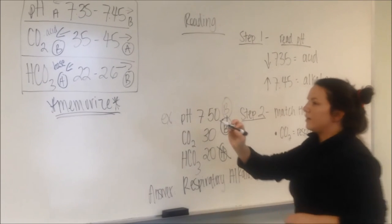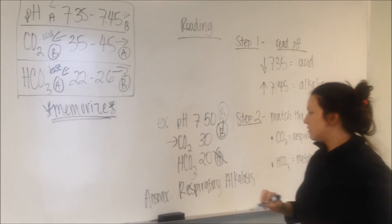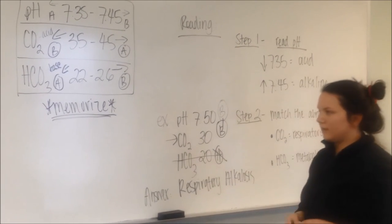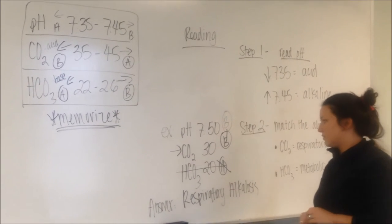Meaning, my body has too much base, but it's a problem for my lungs. It's not from my kidneys. So that's where we get the respiratory alkalosis, because it's too much base.